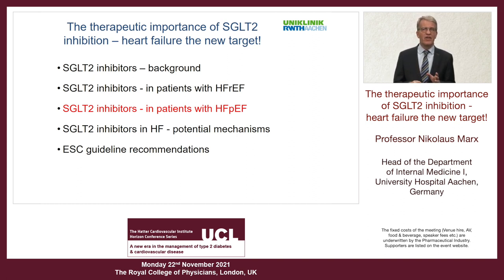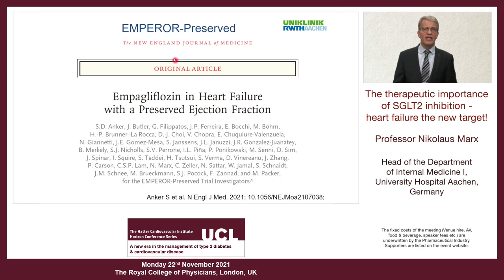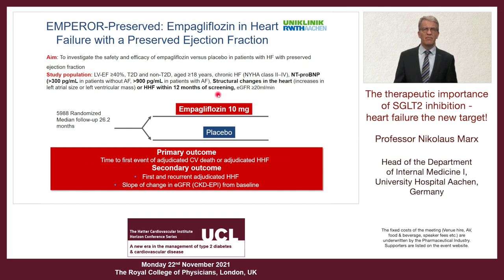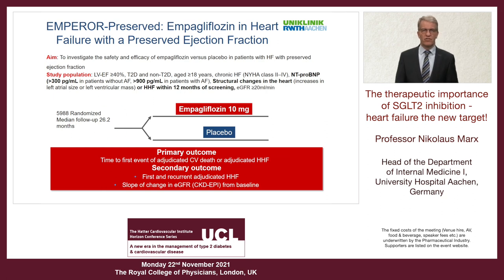Until Emperor Preserved was published, we had no therapeutic option to improve prognosis in HFpEF. This changed when Emperor Preserved was presented at ESC, examining empagliflozin in patients with heart failure and preserved ejection fraction — defined as ejection fraction of 40% or above with signs of heart failure and elevated NT-proBNP. Patients were randomized to empagliflozin versus placebo, almost 6,000 patients, with a median follow-up of 26 months.